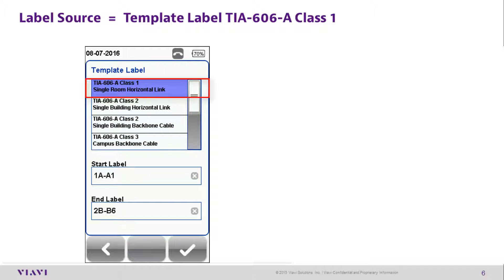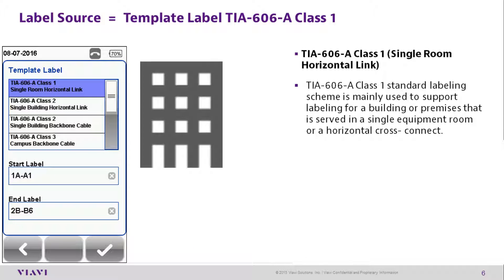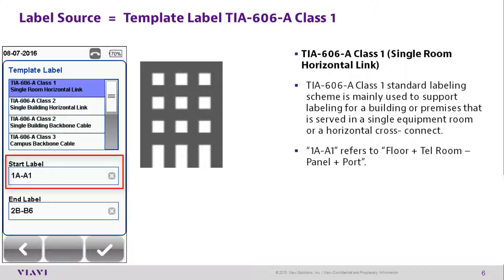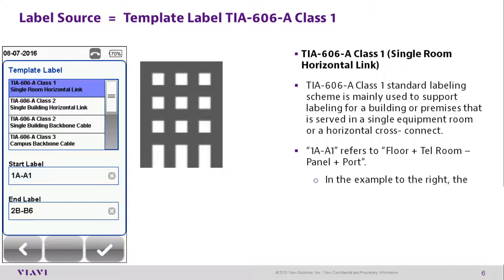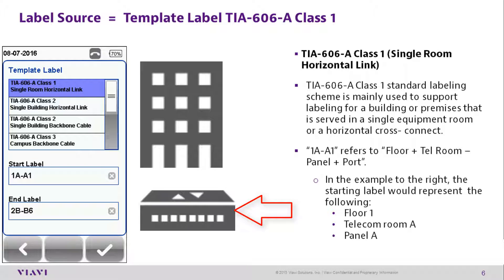Template Label TIA606 Alpha Class 1 is used for single room horizontal links. This is the standard labeling scheme used mainly to support labeling for buildings or premises that serve a single equipment room or a horizontal cross connect. 1-Alpha-to-Alpha-1 generally refers to the floor, teleroom, panel, and port. In the example shown, the starting label represents: Floor 1, Telecom Room Alpha, Panel Alpha, Port 1.